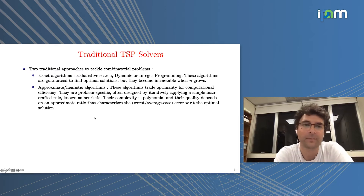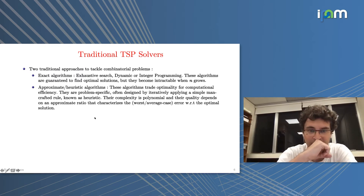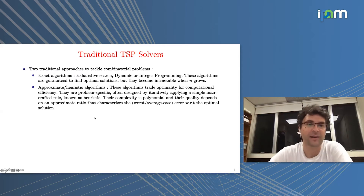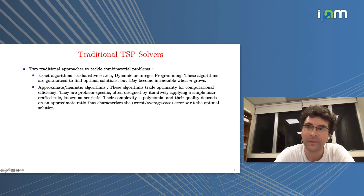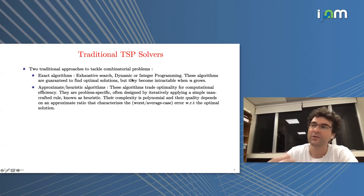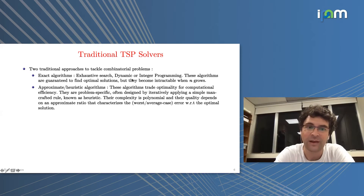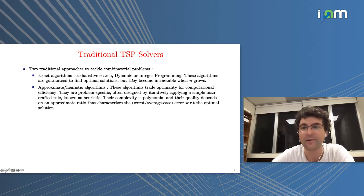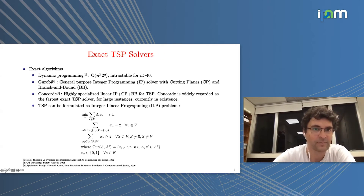There are two traditional classes of algorithms to tackle combinatorial problems. First, exact algorithms like exhaustive search, dynamic programming, or integer programming — these are guaranteed to find the optimal solution but become intractable quickly as n grows. Then there are approximate algorithms where you trade optimality for computational time, designing heuristics — simple rules applied iteratively. Their complexity is usually polynomial and their quality is estimated relative to the best solution.